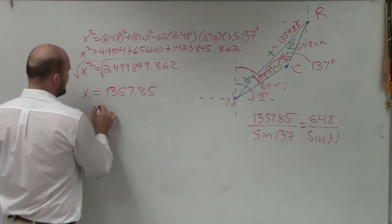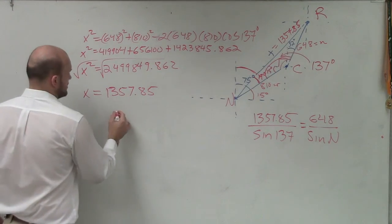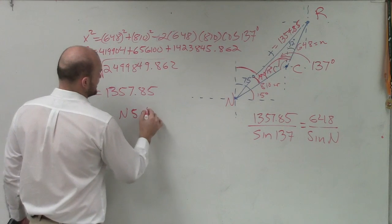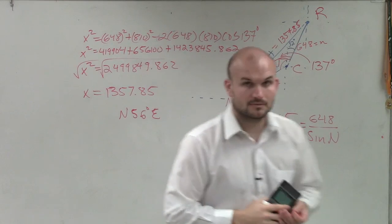Then I do 75 minus 19, and it's going to be 56 degrees. So it's going to be north 56 degrees east. Done.